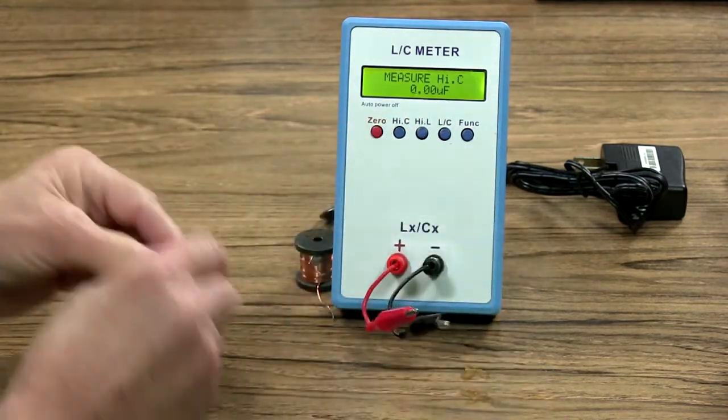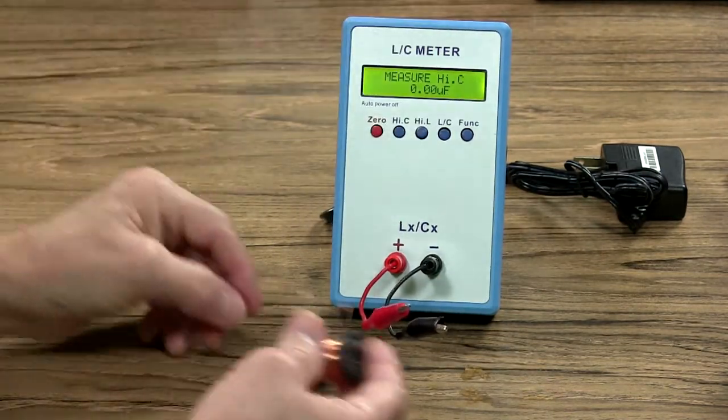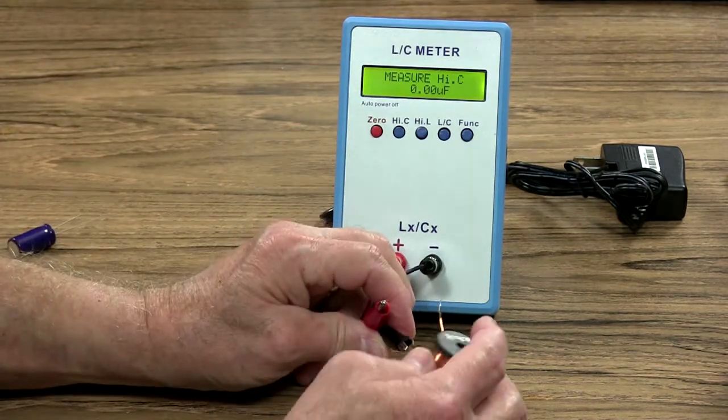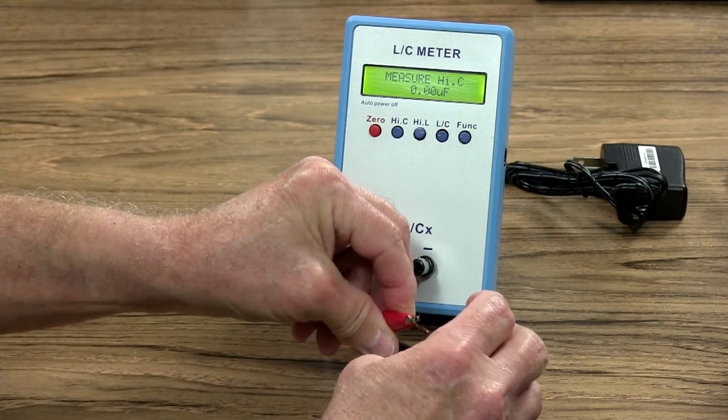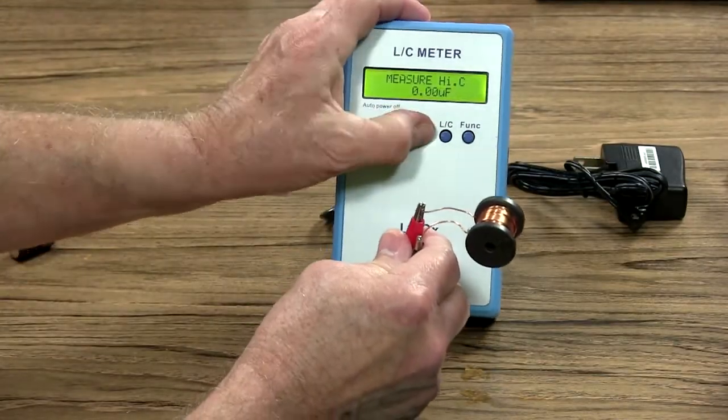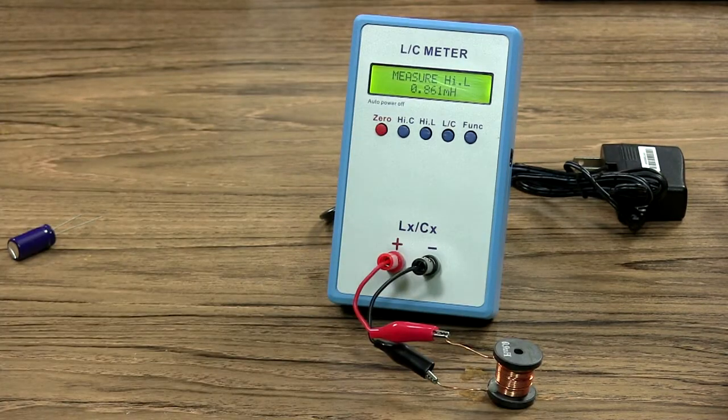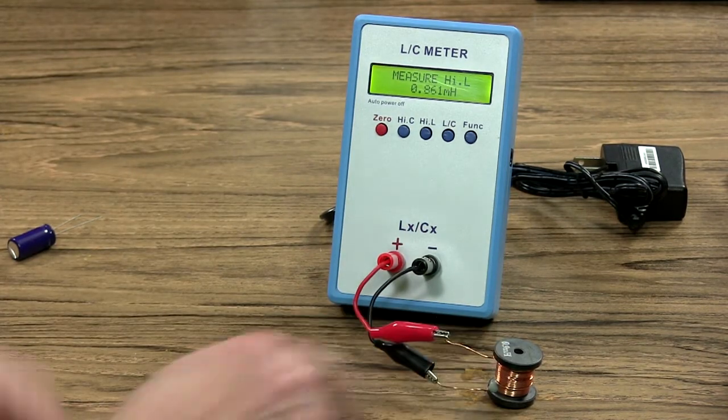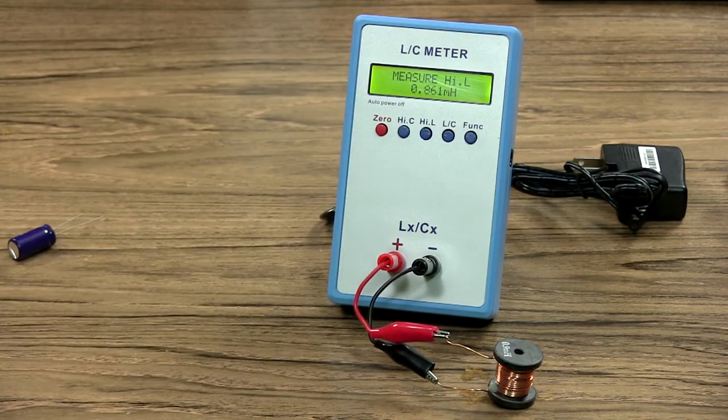It's also good for measuring inductors. Really quick and easy on that as well. Let's flip over to inductors here. I happen to have one handy. Based on that inductor, what would you say that one's going to be, Tommy? Man, 0.9? Yeah, it's 0.9 millihenries. So pretty close on that too.